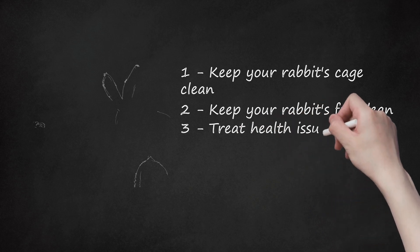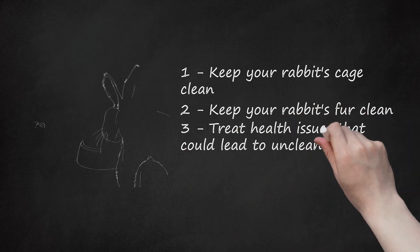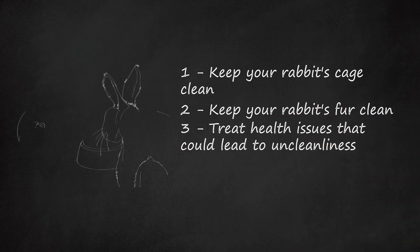3. Treat Health Issues That Could Lead to Uncleanliness. There are some health conditions that lead to a greater risk of a rabbit being unclean around its anus. For example, a rabbit with a urinary infection, or a problem with their bladder, may need to pass urine regularly and is more likely to soil themselves. Likewise diarrhea sticks to fur and is a big risk factor.